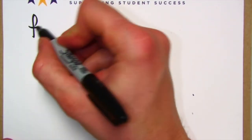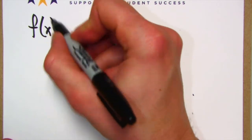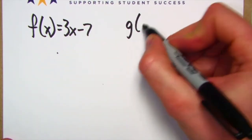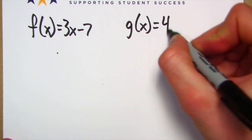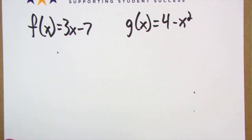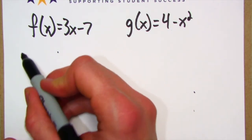So we're going to use the same exact functions. f of x is going to be 3x minus 7, g of x is going to be 4 minus x squared. And here's what I'm going to have you do: I'm going to have you evaluate...